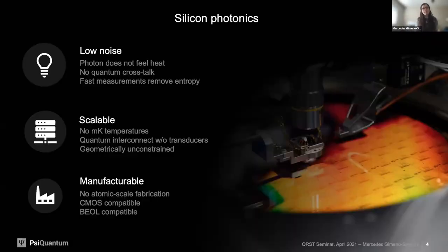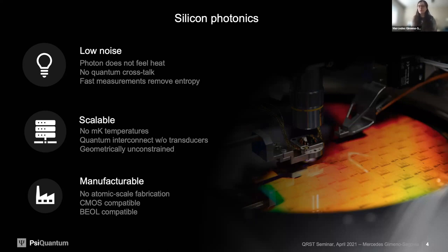We also pursue dual rail photonics in a physical platform: silicon photonics. It has many advantages — we can achieve very low noise thanks to the excellent design tools available. It's an inherently scalable platform because we do not need millikelvin temperatures. Our photons can connect directly from a silicon photonics chip onto an optical fiber — the same ones developed for optical communication — without the need for transducers, and we do not need any atomic-scale fabrication. All of this convinces us this platform can scale to a full fault-tolerant quantum computer, since the step change from a few qubits to hundreds of logical qubits requires several orders of magnitude.